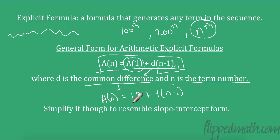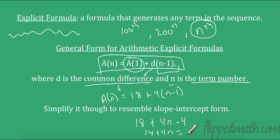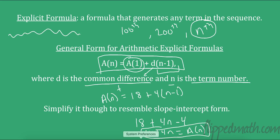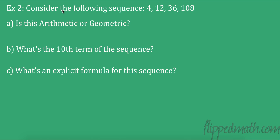We could even simplify that: 18 plus 4n minus 4 equals 14 plus 4n. Now we have it in slope-intercept form. For now, I'm just going to have you get it to the unsimplified step each time. Now we have a new sequence: 4, 12, 36, and 108.